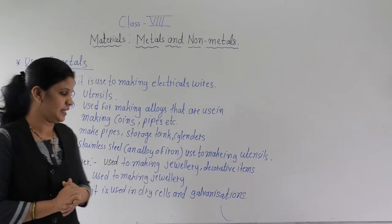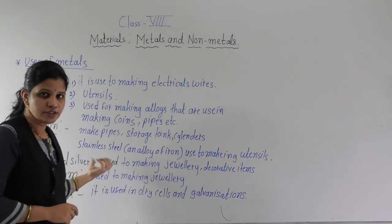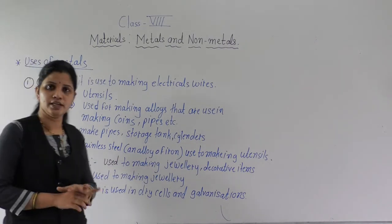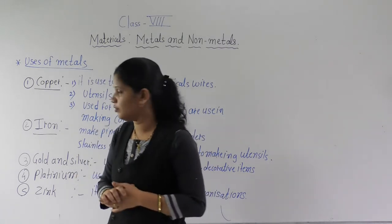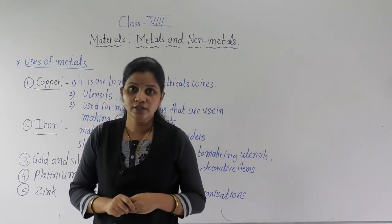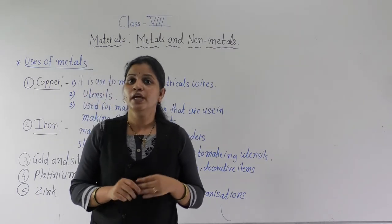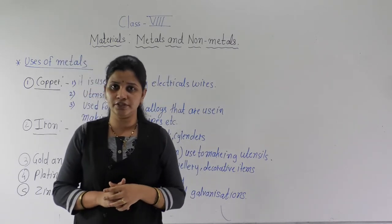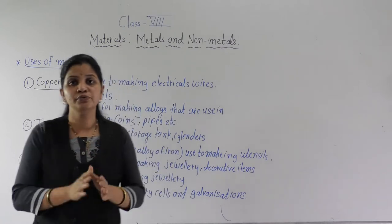First we will see the uses of metals. Here I have written some metals and the uses of those metals. After this lecture, just write down in your notebook — here I have given only some examples of the use of each metal, but you have to write most of the metals and their uses. The first metal, most commonly, is copper. Copper is a good conductor of electricity, so it is mostly used in making electrical wires. That is the major use of copper.